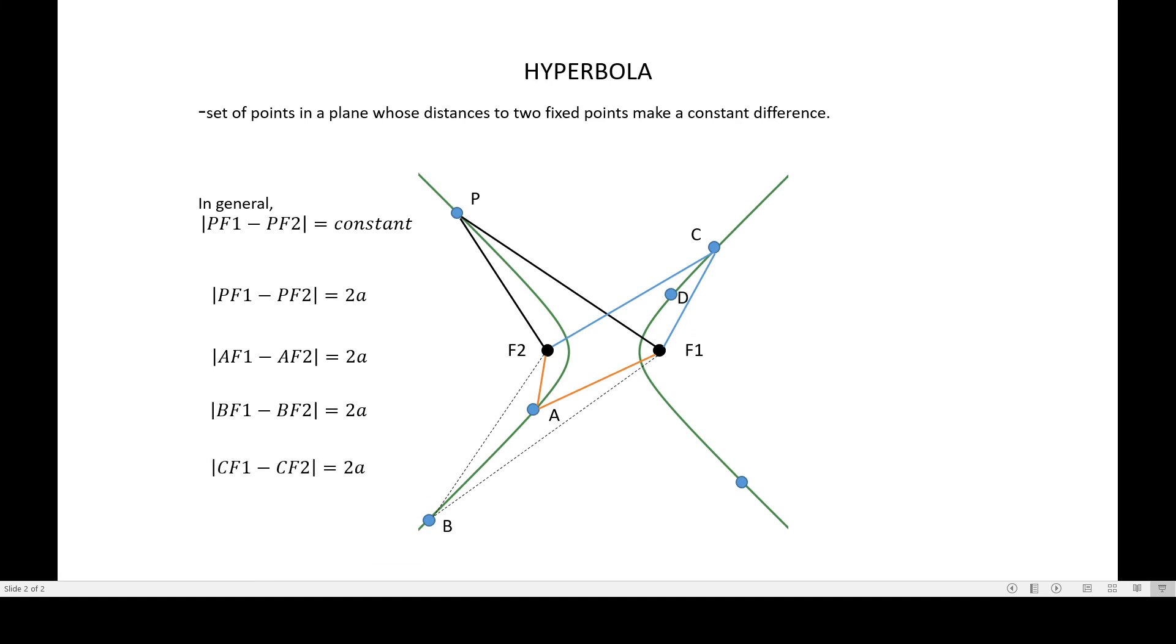If I have point D, the difference of the distances will be 2a as well. If I have point G, then of course, the difference of the distances will be 2a again. So you can choose any point in the hyperbola, you will always come up with a constant difference or the same difference, and that will always be 2a.